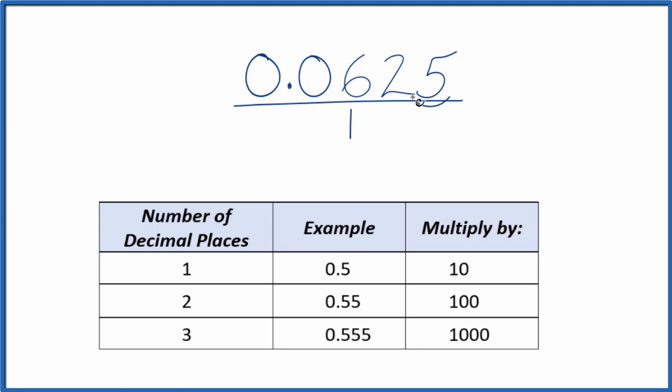I can see I have one, two, three, four decimal places. So with three decimal places, it's 1,000. With four, I'm going to multiply this by 10,000.